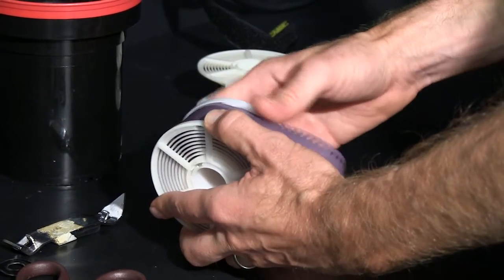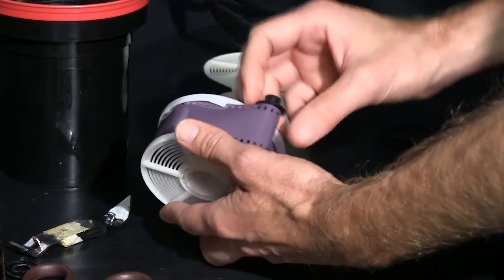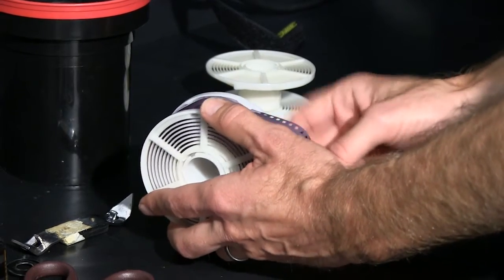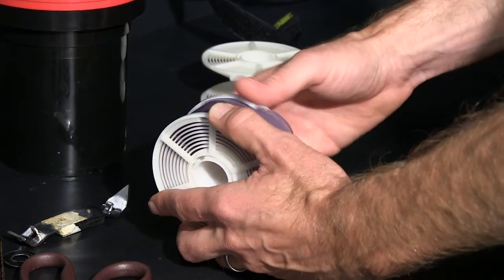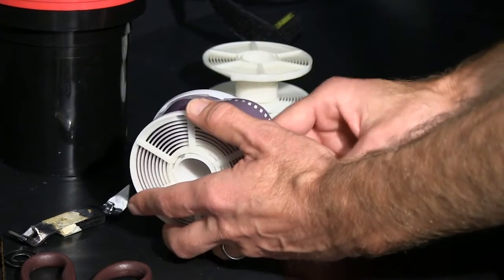You can see it has a tendency to kind of pop up and want to get caught in that mechanism, so you want to unwind it and either hold it down on the table or underneath your finger as you're winding.